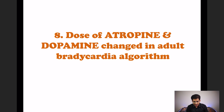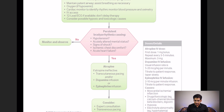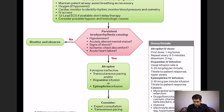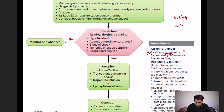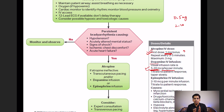The eighth update changes the doses of atropine and dopamine in adult bradycardia. Previously, atropine for symptomatic bradycardia was 0.5 mg; now it's increased to 1 mg IV bolus. Dopamine dose previously was 2 to 20 micrograms per kg per minute; now changed to 5 to 20 micrograms per kg per minute, excluding the lower 2 to 5 range.